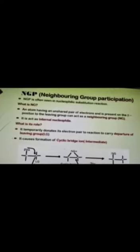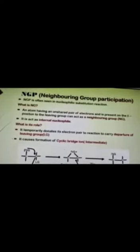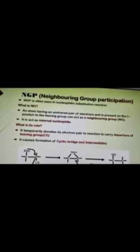One more important point is the location. Neighboring group is always located at the beta position with respect to the leaving group.